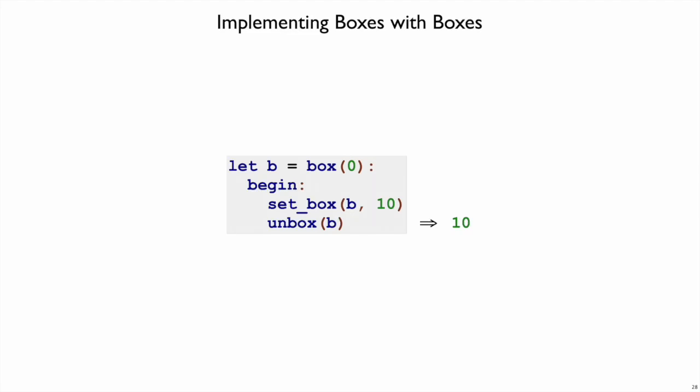We have this example of how we want mode to behave with these new forms. If we create a box of 0, change it to 10, and unbox v, clearly we should get a 10 back as a result.